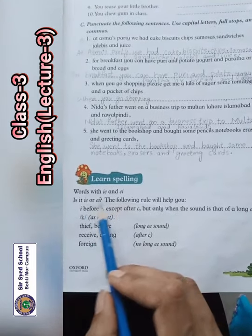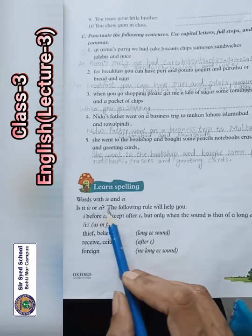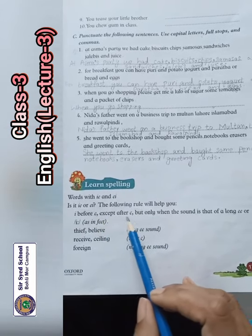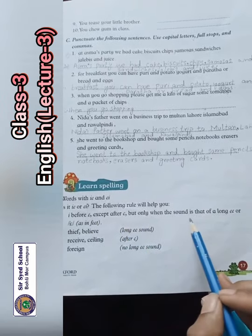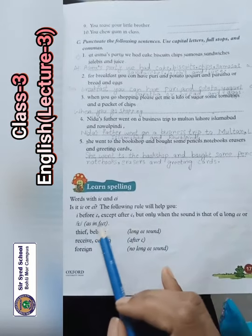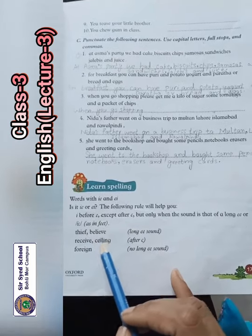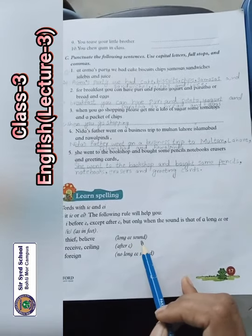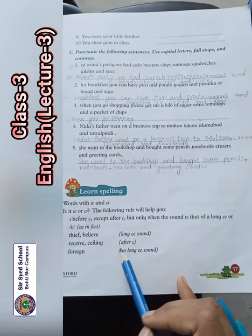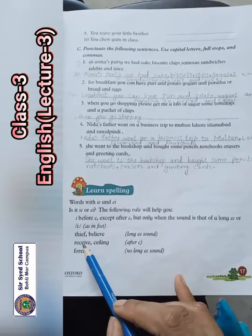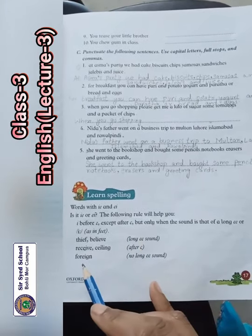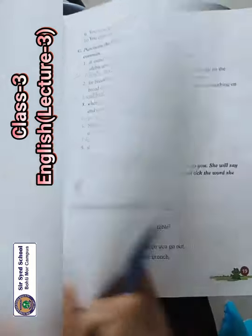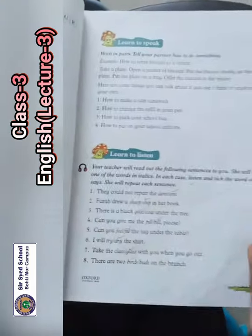Now come towards page number seventeen: words with I-E and E-I. Is it I-E or E-I? The following rule will help you: I before E except after C, but only when the sound is that of a long double-E, as in feet. Just like 'thief' and 'believe' — long E sound. 'Receive' and 'ceiling' come after C. The word 'foreign' also has no long E sound, so the rule has no power there.